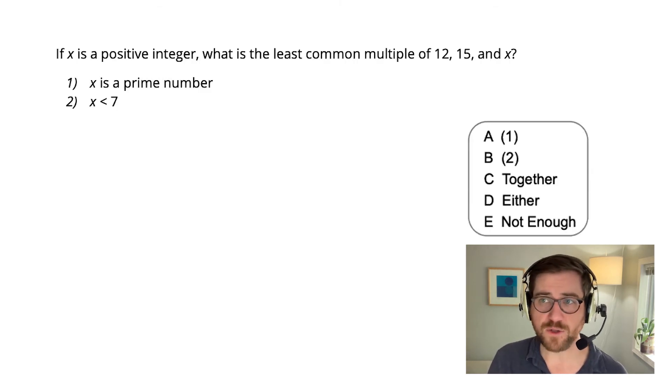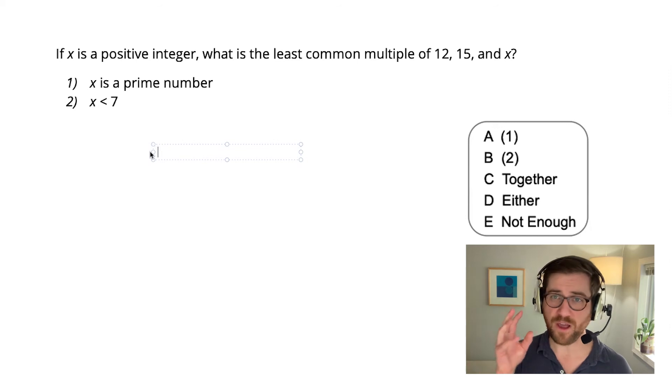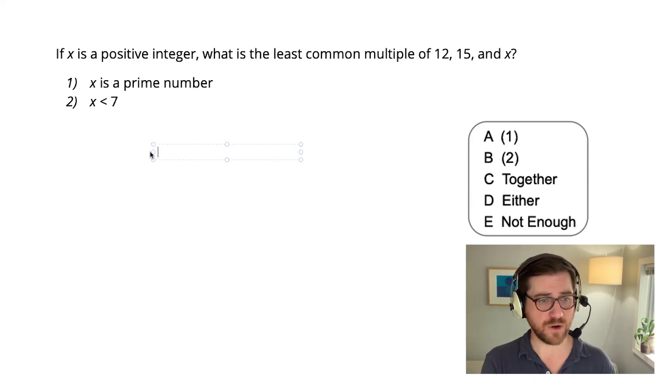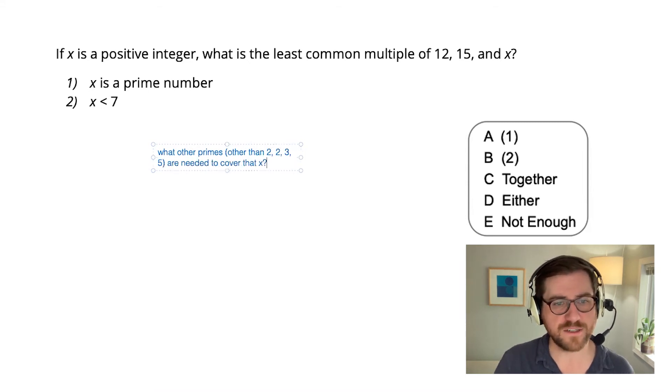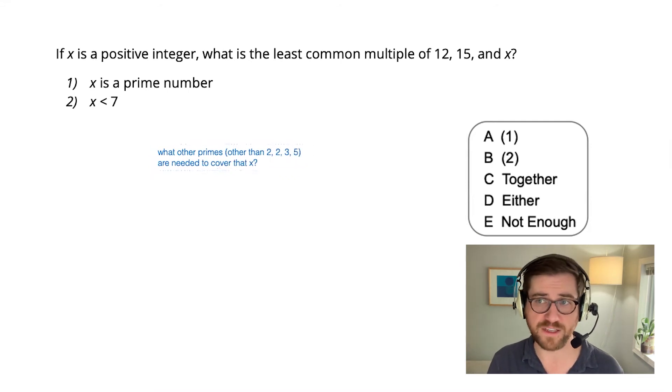So I'm going to rephrase this question. What do I really need to know if I'm looking for the least common multiple of 12, 15, and x? Well, I already know what it takes to cover the 12 and the 15. The real question is just what other primes are needed to cover the x. So what other primes, and by other primes I mean other than 2, 2, 3, and 5, are needed to cover that x? That's the real question. If I can answer that, then I can go figure out what the least common multiple is.